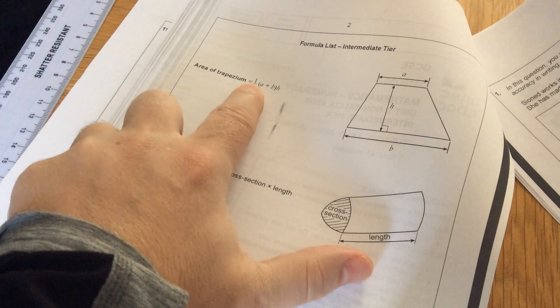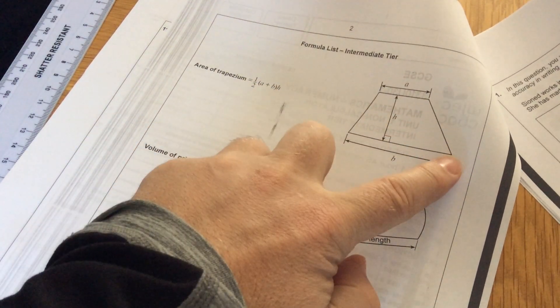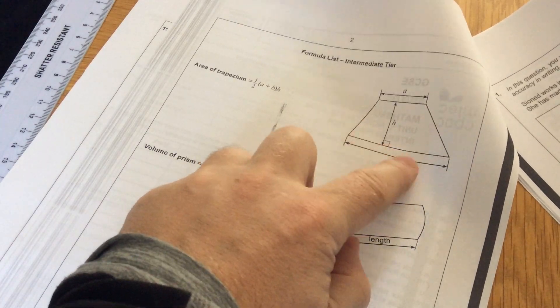The area of a trapezium is half A add B times the height, where A is the top parallel side, B is the other parallel side, and H is the perpendicular height.